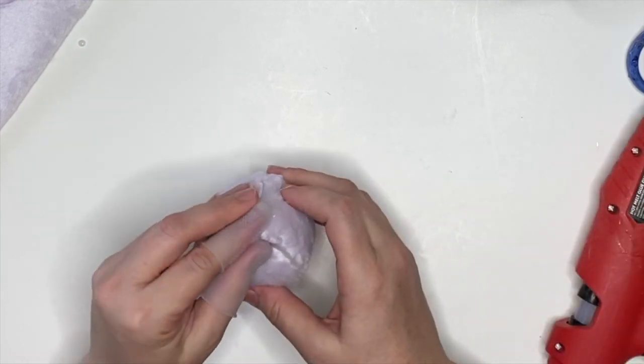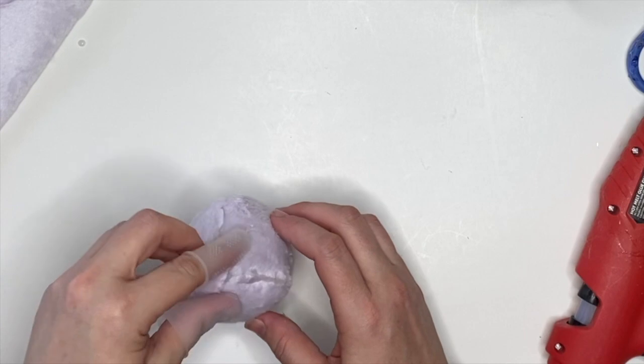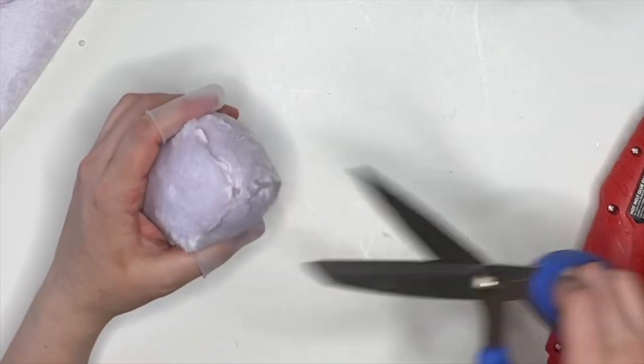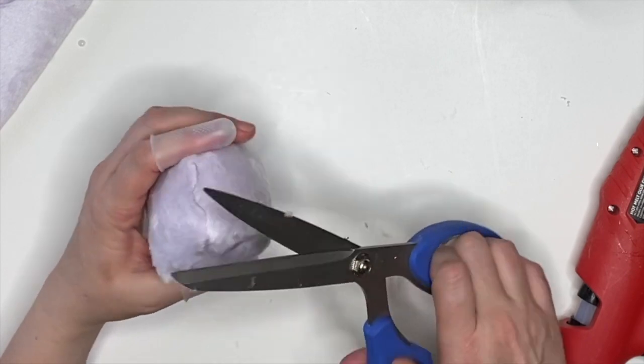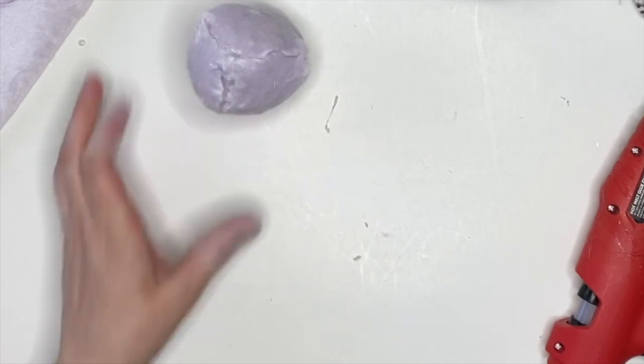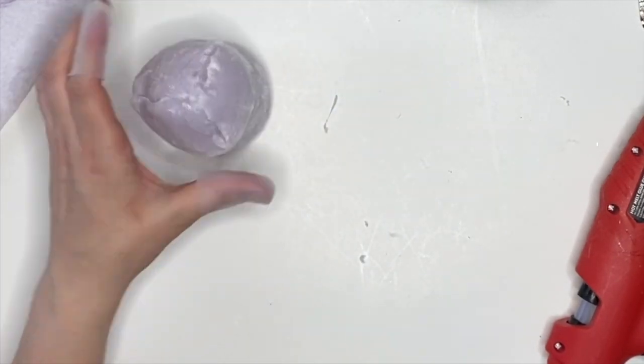This also reminds me of the Demogorgon from Stranger Things. It's a scary show but it's good. Anyway, you're going to squeeze it, drop it, make sure that this base is solid because this is the base of our gnome. I'm just cutting off any of the glue that seeped out. I'm tossing and dropping it to make sure it always lands flat.